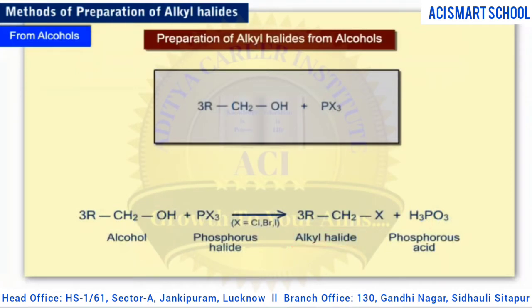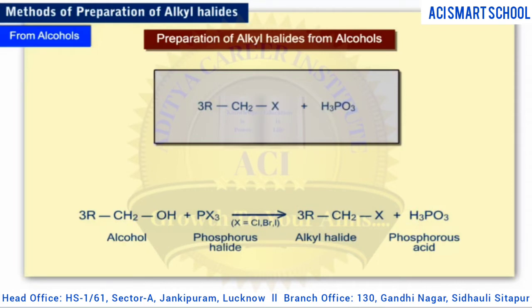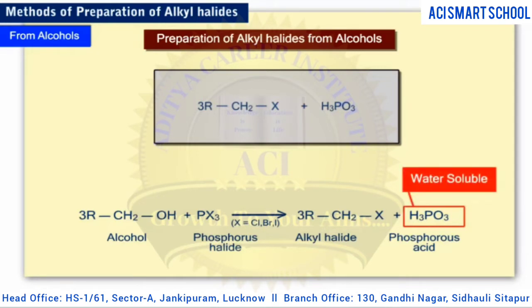Alkyl halides can also be prepared by reacting alcohols with phosphorus halides. In practice, phosphorus tribromide is the most common phosphorus halide used. A general equation for a reaction between an alcohol and a phosphorus trihalide is shown here. Note that the hydroxyl group is substituted with the halogen atom. The other product of the reaction, phosphorous acid, is water soluble and can be removed by washing the alkyl halide with water.